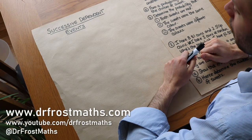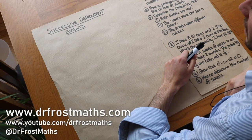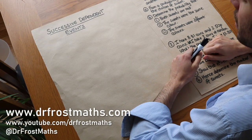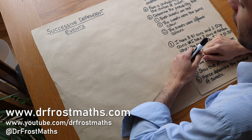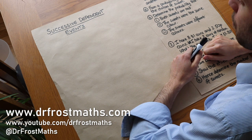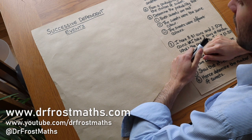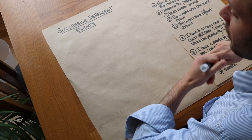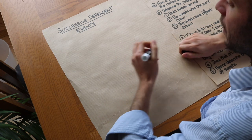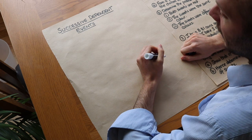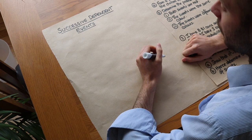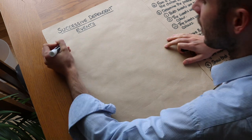Hello and welcome to this video on finding the probability of successive dependent events. In the previous video we looked at independent events, so let's define the probability of getting two heads after throwing a fair coin twice.